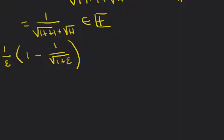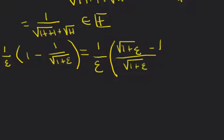How do we deal with this? We'll make this whole expression into one fraction. A common denominator is square root of 1 plus epsilon. So we get 1 over epsilon times the quantity square root of 1 plus epsilon minus 1, all over square root of 1 plus epsilon — combining the expression into a single fraction.